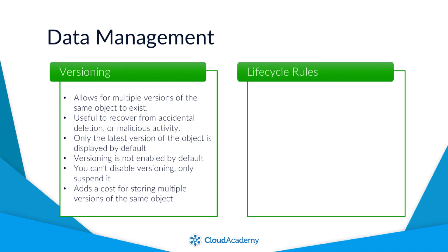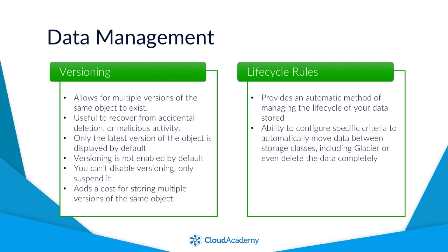Lifecycle rules in AWS provide an automatic method of managing the life of your data while it is being stored on Amazon S3. By adding a lifecycle rule to a bucket, you are able to configure specific criteria that can automatically move your data from one storage class to another, move it to Amazon Glacier, or delete it from Amazon S3 altogether. You may want to do this as a cost-saving exercise — for example, moving data to a cheaper storage class after 30 days, at which point Amazon S3 will automatically change the storage class as per the lifecycle rule.